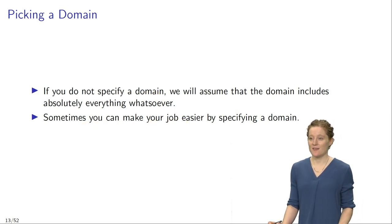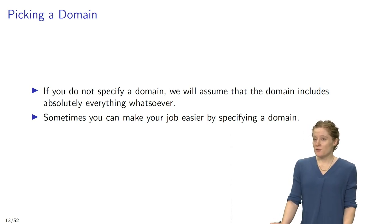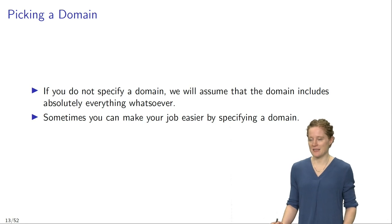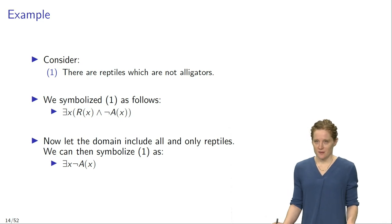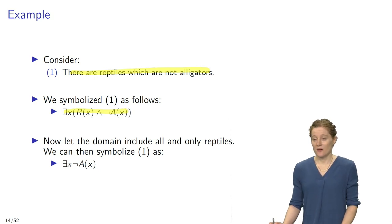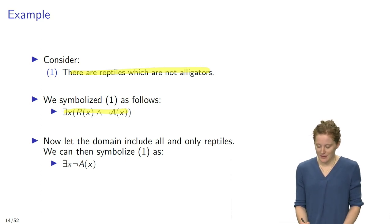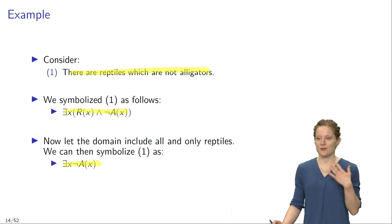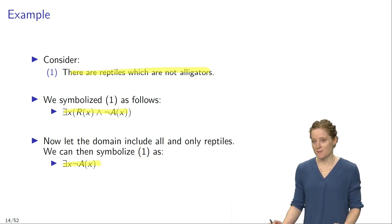Now let's talk about a few caveats and complications. If you do not specify a domain, we will in general assume that the domain includes absolutely everything whatsoever. In some cases you can make your job easier by specifying a domain. For example, for the sentence 'There are reptiles which are not alligators,' we symbolized it as 'there is an X such that Rx and not Ax.' But alternatively, if we stipulate that our domain includes all and only reptiles, we could symbolize it more simply as 'there is an X such that not Ax,' since the domain already restricts us to reptiles.